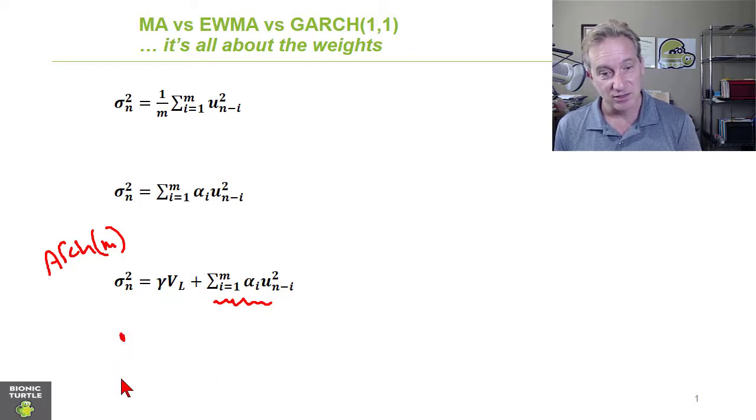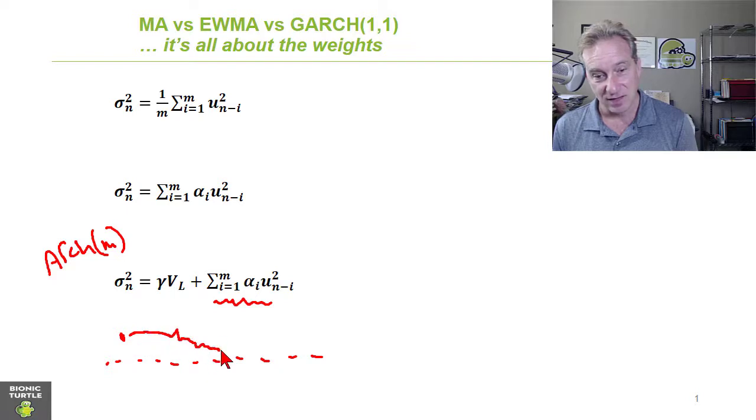Which is to say, we could be right here in volatility, but there may be a long-run or unconditional variance and our variance is going to get pulled toward this long-run value depending on some weight gamma.